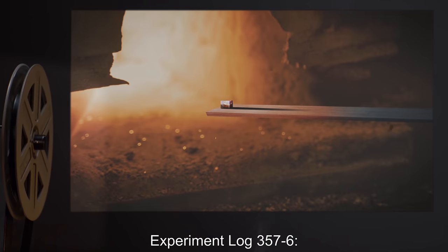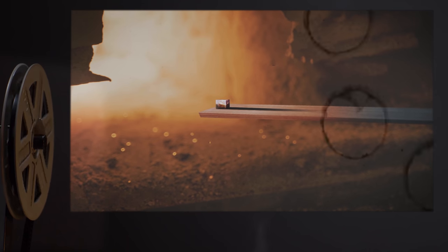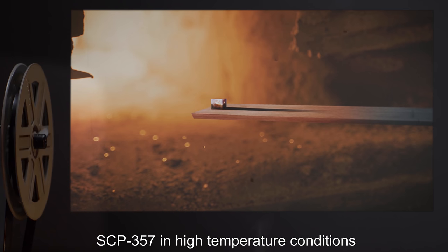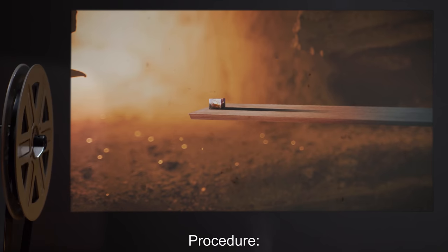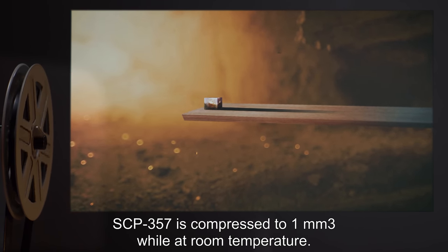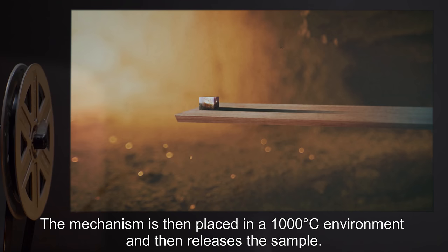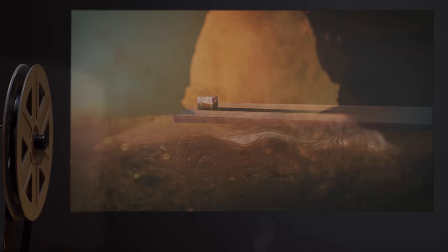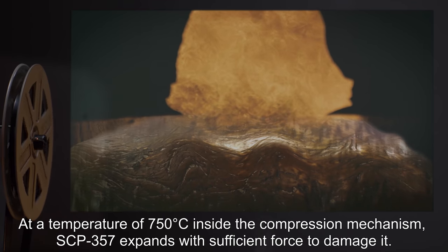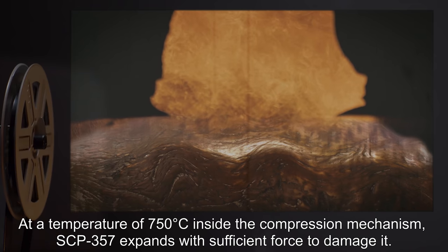Experiment Log 357-6. Date: Undisclosed. Subject: SCP-357 in high temperature conditions. Procedure: SCP-357 is compressed to one millimeter cubed while at room temperature. The mechanism is then placed in a one thousand degrees Celsius environment and then releases the sample. Details: At a temperature of 750 degrees Celsius inside the compression mechanism, SCP-357 expands with sufficient force to damage it.